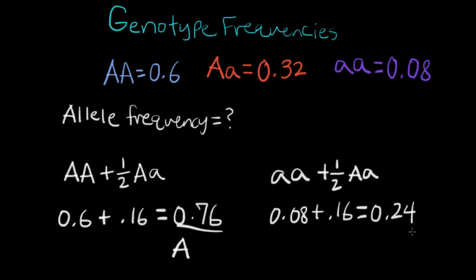So the allele frequency for the little a allele is going to be 0.24 and big A is 0.76. If we add those two together, we get 1, which should be correct. Because in Hardy-Weinberg equilibrium, we know that P plus Q is going to give us 1.